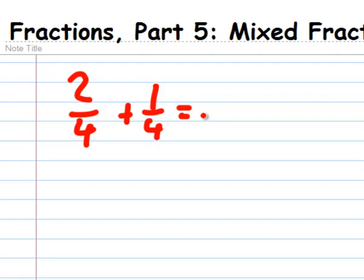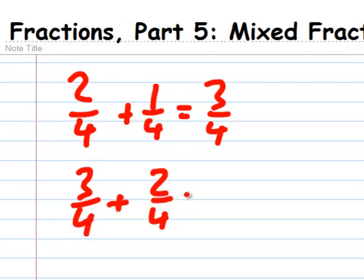so 2 fourths plus 1 fourth equals 3 fourths. How about 3 fourths plus 2 fourths? That's easy, right? 3 plus 2 equals 5, so 3 fourths plus 2 fourths equals 5 fourths.